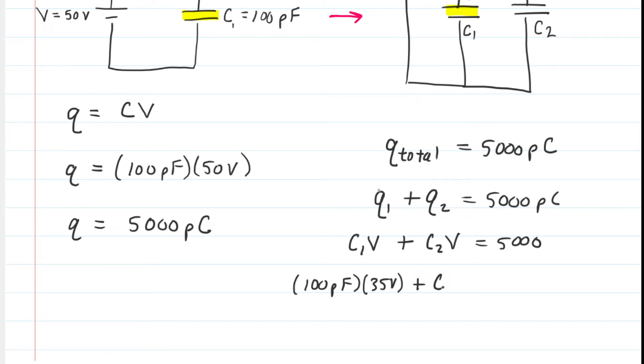We don't know the value of C2. But we do know the potential difference across the plates of C2. It was that 35 volts. And this is equal to 5000. This should have been picocoulombs.